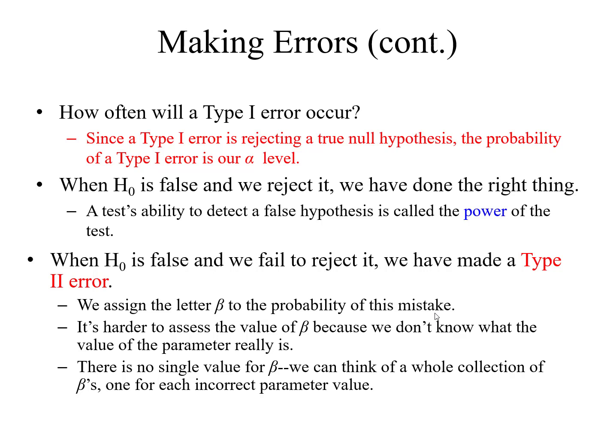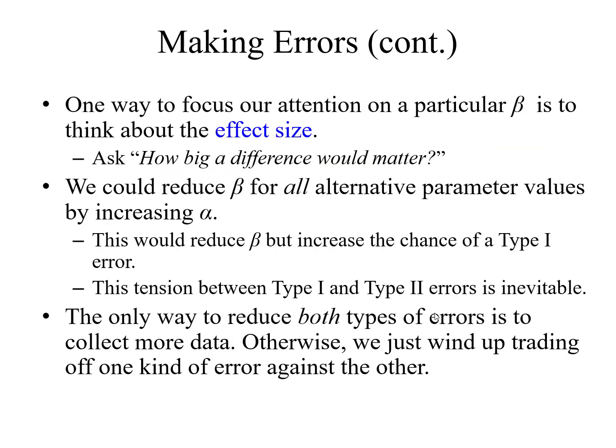Beta is also called consumer risk. For example, if a firm is producing 100 units and 50 are defective and 50 are good, if an inspector randomly selects a sample and fortunately finds only good parts, they will accept the lot on the basis of those good parts — even though the lot should be rejected because there is a 50-50 chance of defects. The consumer will then buy that lot and discover the problem. One way to focus on a particular beta is to think about the effect size.